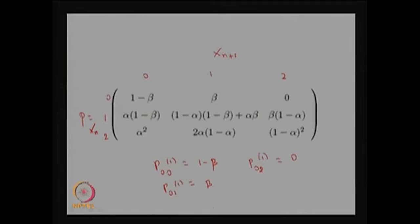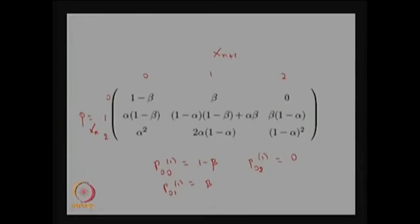P(1,0) is possible through two independent events: one working machine fails with probability alpha, and the repair crew does not finish the repair of the broken machine with probability 1 minus beta. Therefore P(1,0) equals alpha times 1 minus beta.